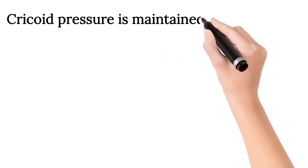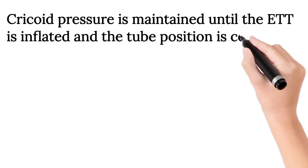Cricoid pressure is maintained until the endotracheal tube is inflated and the tube position is confirmed.